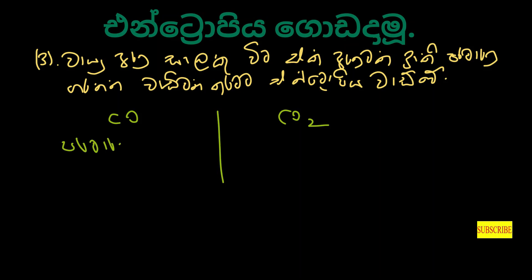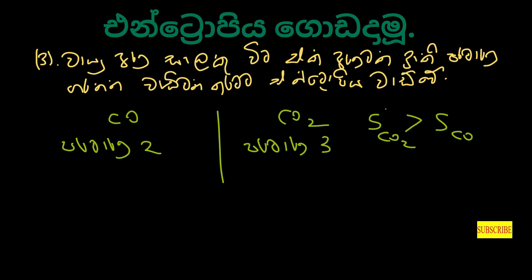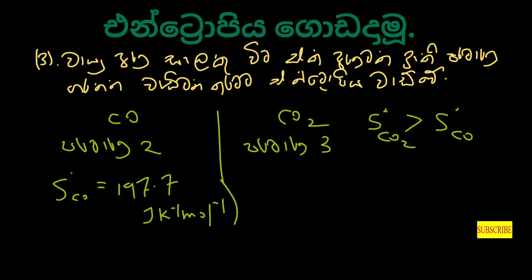If you look at carbon dioxide, you can see carbon dioxide is a carbon dioxide. This is not the same as carbon monoxide. Carbon dioxide and carbon monoxide have the same entropy. So we will see the entropy of carbon monoxide. CO2 has an entropy of 10.7 joules per Kelvin.